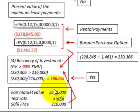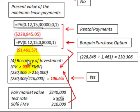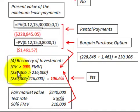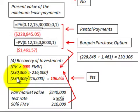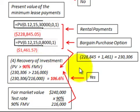Now we do our testing. The fair market value is $240,000 and our test rate is 90%, so 90% times $240,000 equals $216,000. The present value of $230,306 must be greater than 90% of the fair market value. Since $230,306 is greater than $216,000 — or expressed as a ratio, $230,306 divided by $240,000 equals 106.6%, which exceeds 90% — it passes the recovery of investment test.